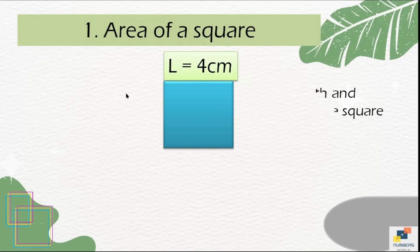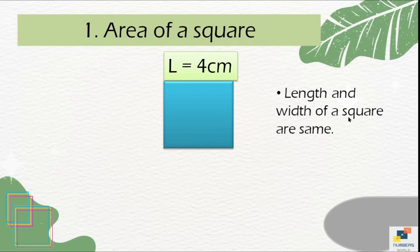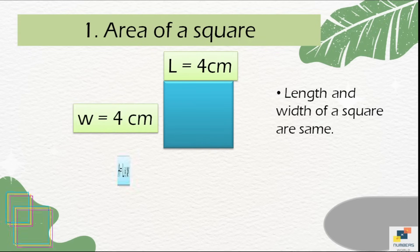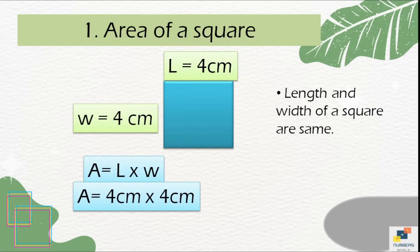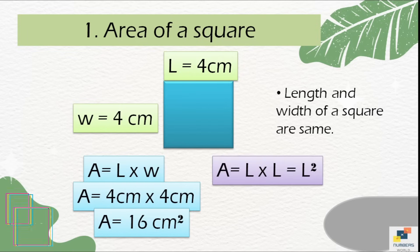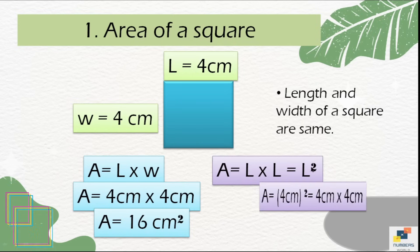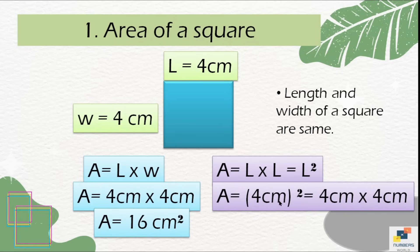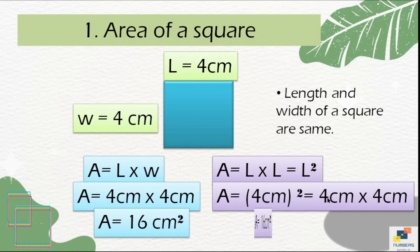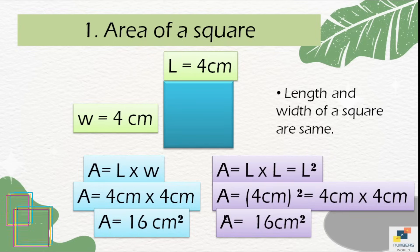Now for the area of a square: if length is given but no width, remember that length and width of a square are the same. Write the formula, put in the values, and find the answer. Alternatively, since both sides are equal, we replace w with l, so the formula becomes l × l, or l squared. The value of l is 4 centimeters, so multiply it by itself: the answer is 16 centimeters squared.